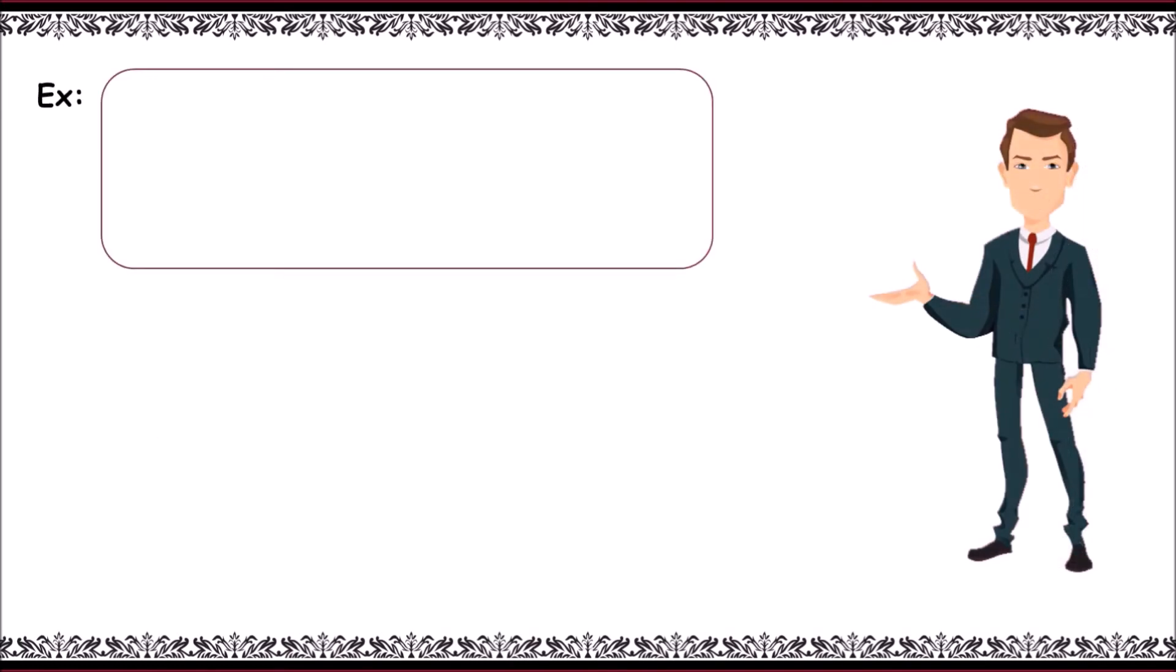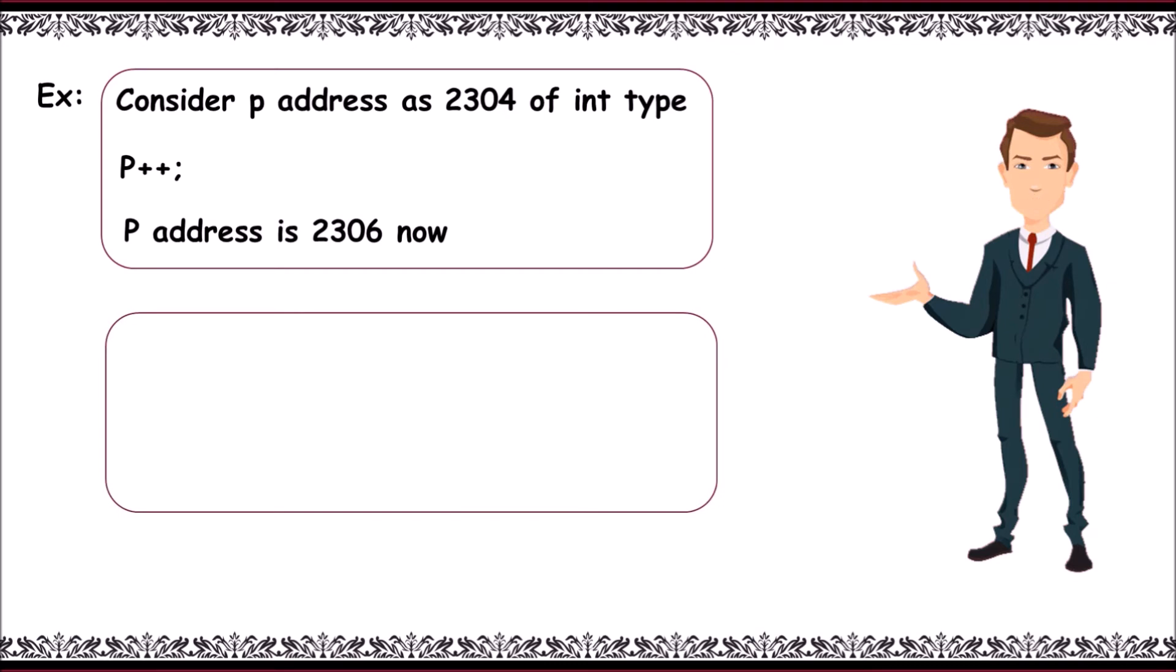In another example, consider p address as 2304 of int type. Next, on incrementing it, that is p plus plus, p address is 2306, as it is incremented by 2.